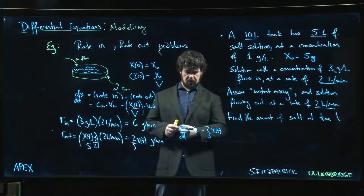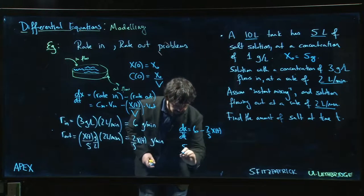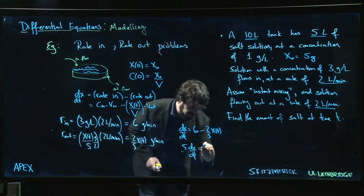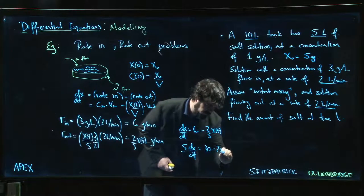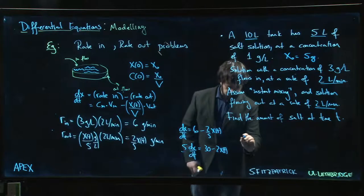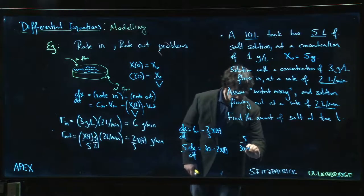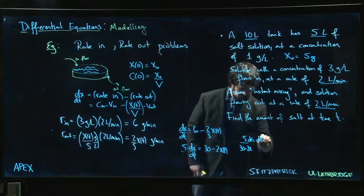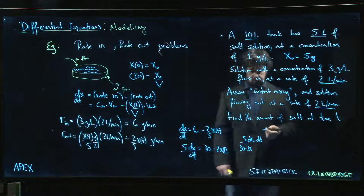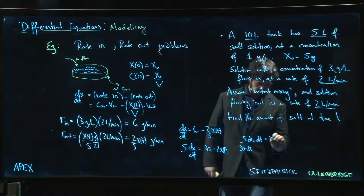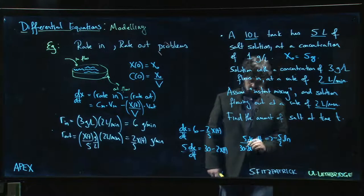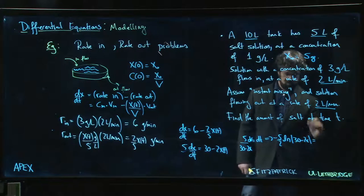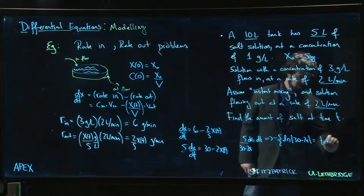You might find it convenient maybe to multiply both sides by five just to get rid of the fractions. So five dx/dt is 30 minus two x(t). So five over 30 minus two x times dx is equal to dt. Okay, so we integrate: minus five over two times the natural log of 30 minus two x is equal to simply, well, t possibly plus some constant.